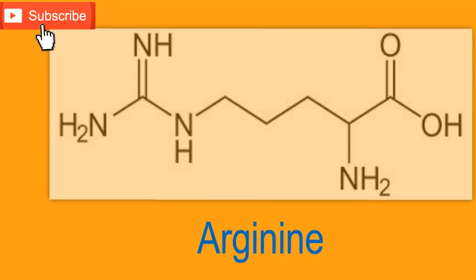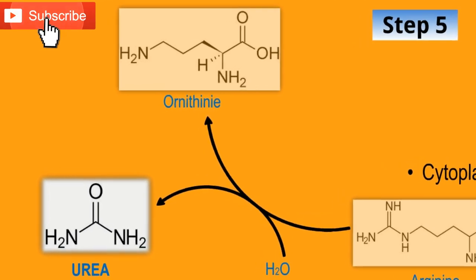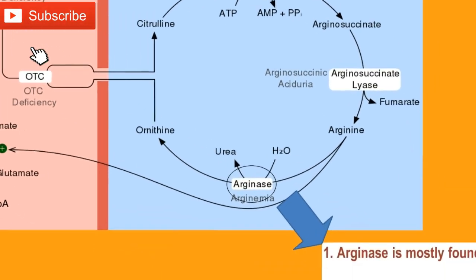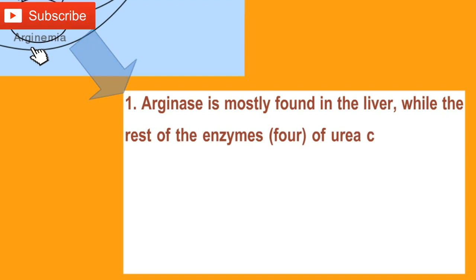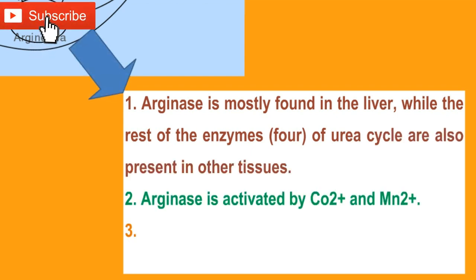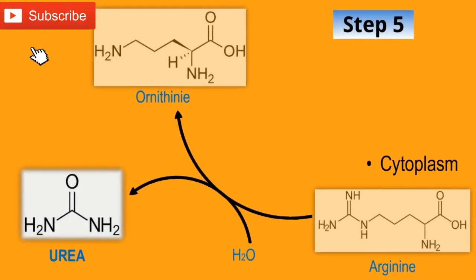Step 5 is the formation of urea. Arginine, in the fifth and final step, breaks into urea and ornithine by the enzyme arginase. Ornithine so regenerated enters mitochondria for its use in the urea cycle. Arginase is mostly found in the liver, while the rest of the enzymes of the urea cycle are present in other tissues. Arginase is activated by cobalt and manganese. Ornithine and lysine may compete with arginine via competitive inhibition. Arginine synthesis may occur in many tissues, but only the liver can ultimately produce urea.